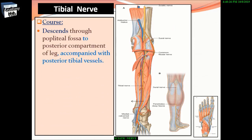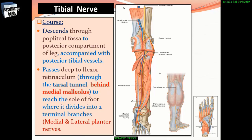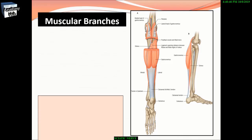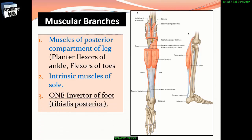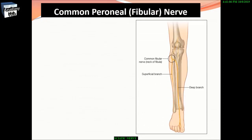The tibial nerve descends through the popliteal fossa to the posterior compartment of the leg, accompanied by the posterior tibial vessels. It passes deep to the flexor retinaculum through the tarsal tunnel behind the medial malleolus to reach the sole of the foot, where it divides into the medial and lateral plantar nerves. Muscular branches supply the muscles of the posterior compartment of the leg: plantar flexors of the ankle, flexors of the toes, intrinsic muscles of the sole, and one inverter of the foot — tibialis posterior.